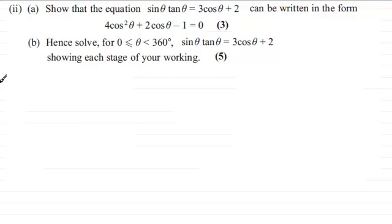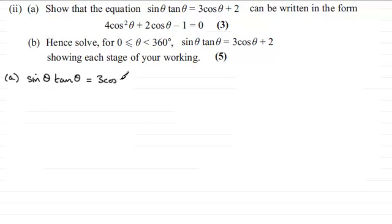Welcome back. Starting with part a, we've got sine theta multiplied by tan theta equals 3 cos theta plus 2. Looking at what we've got to get to, it's all in terms of cosine theta. So this term looks okay, but it's the sine theta tan theta term that we've got to work on.